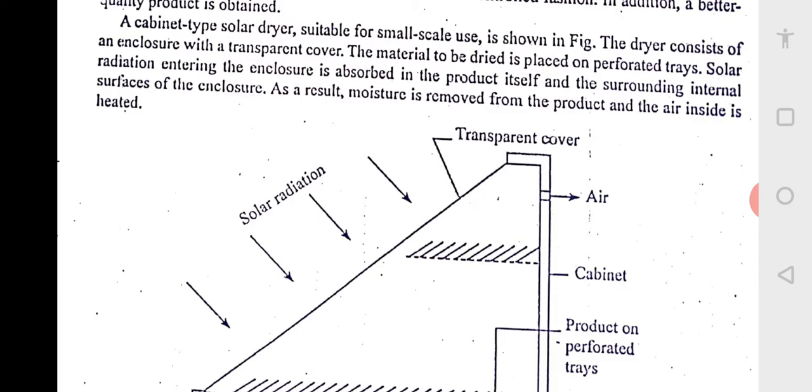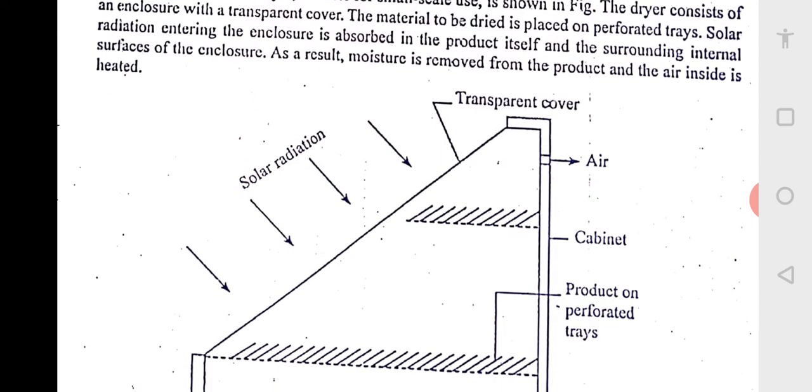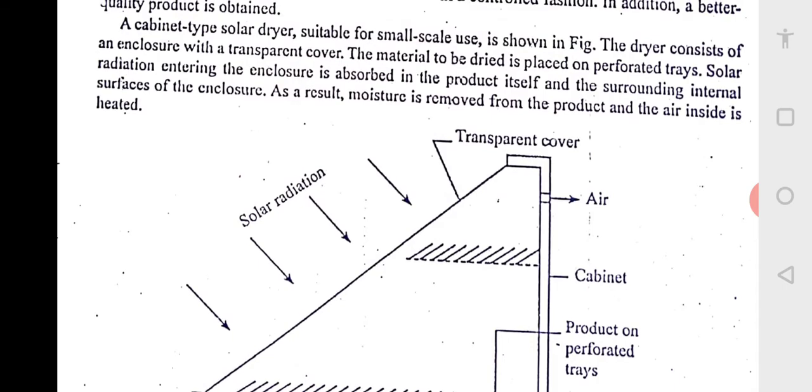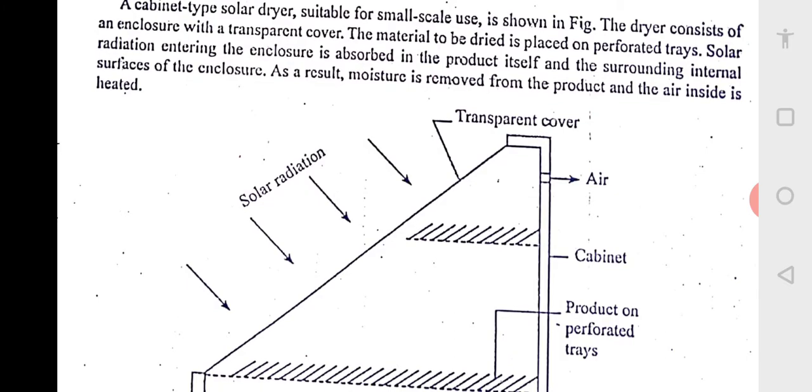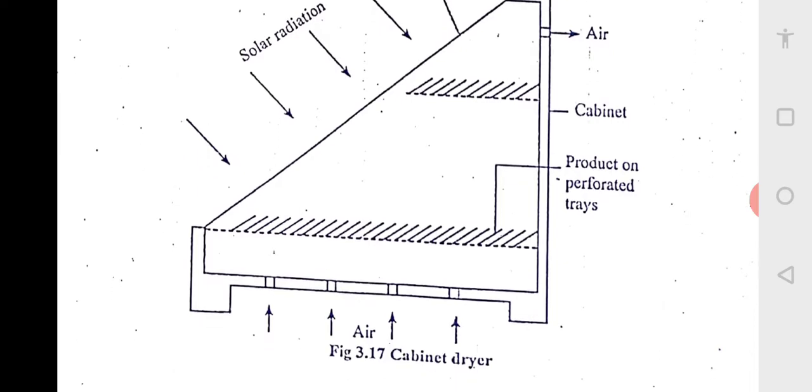A small solar trap dryer is shown in the figure. It consists of an enclosure with a transparent cover. The material to be dried is placed on the perforated trays. You can see the hatched lines, two hatched lines are there. Both are the perforated trays. Perforated means they have got holes in the bottom, so that air can move in and out. Solar radiation entering the enclosure is absorbed in the product itself and the surrounding internal surfaces of the enclosure. As a result, moisture is removed from the product and the air inside is heated.